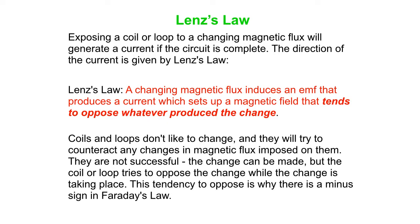Basically, current loops are a lot like us — they don't like change. They will try to counteract any changes in magnetic flux imposed on them. Of course, they're not successful; we can make the change. But while we are making a change in the magnetic flux, the coil or loop tries to oppose that change while the change is taking place. This tendency to oppose is why there is a minus sign in Faraday's Law.